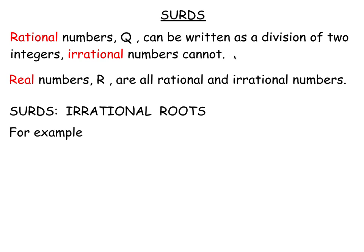The number pi, which is the ratio of the circumference of a circle to its diameter, is an irrational number. Pi is a decimal — it's non-terminating, that is the figures go on forever after the decimal point, and it's non-recurring, that is there's no pattern to the numbers after the decimal point. So it can't be written as a fraction or exactly as a decimal.